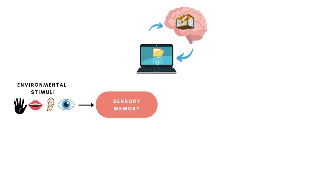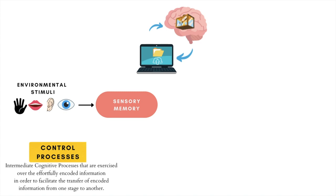Before proceeding, note that the multi-store model proposes a number of control processes. Control processes are a set of intermediate cognitive processes that govern and facilitate how successfully information is transferred from one unit of the model to another. In this model schematic, we highlight the control processes in yellow to help distinguish them from the memory units themselves.